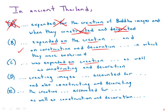Creation, constructing, decoration — that's a failure of parallelism. C is out. Creating, constructing, decorating — that works. Creation, construction, decoration — that works.